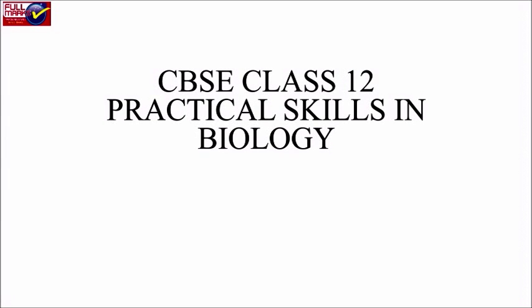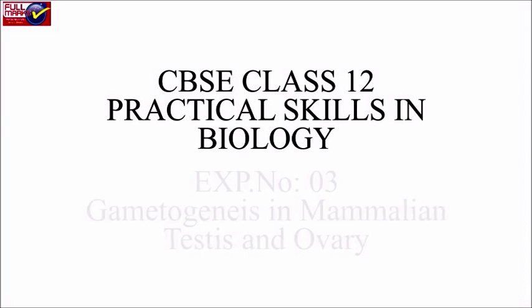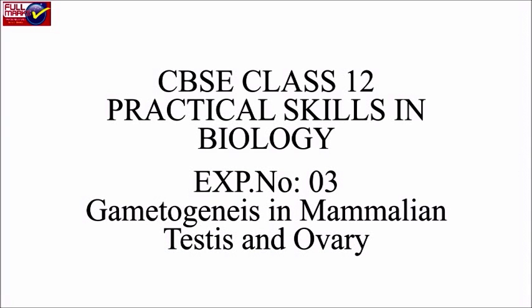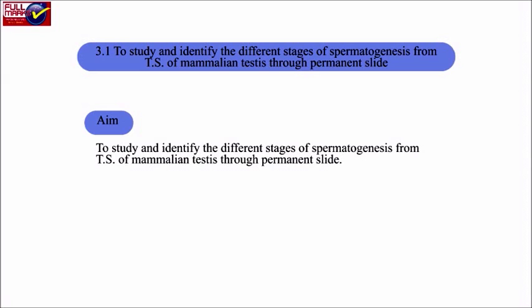CBSE Class 12 practical skills in biology, experiment number three: gametogenesis in mammalian testes and ovary. Experiment 3.1 — aim: to study and identify the different stages of spermatogenesis from the transverse section (TS) of mammalian testes through a permanent slide.